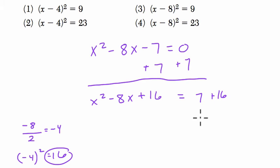So 7 plus 16 is 23. And here, we can factor x squared minus 8x plus 16. It's a perfect square, so we can factor it to something squared, and that's x plus 4. So it's going to be the square root of this term. So x plus 4 squared equals 23.